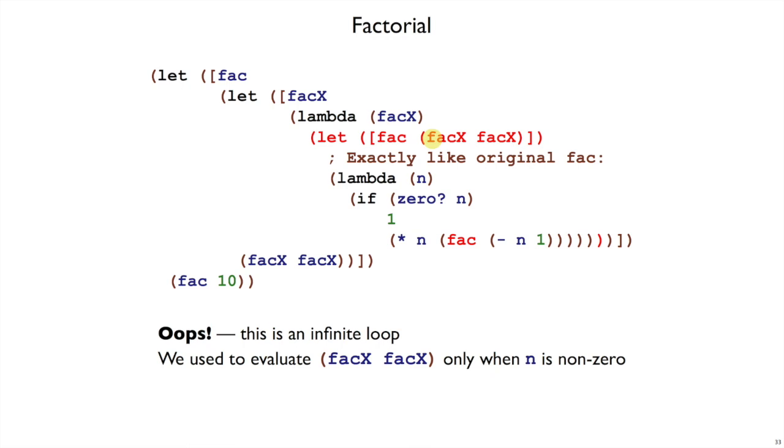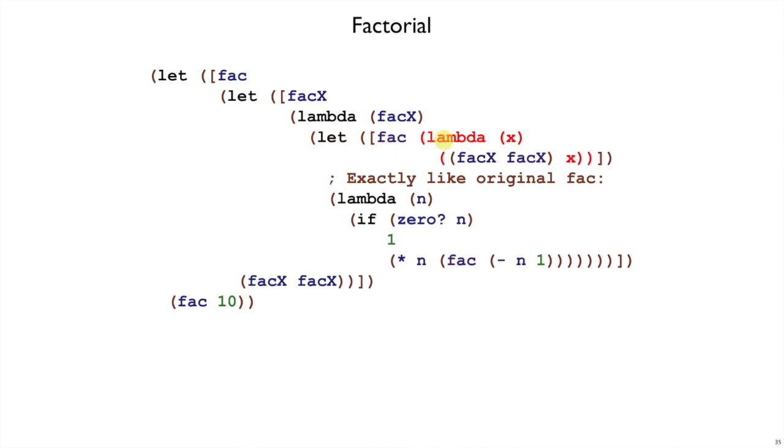So to solve this problem, we need to make sure that we only do this self-application when we get this far. And we can do that by delaying the self-application up here. That is, we do the reverse of the transformation we did before. We add a lambda X and then just pass that X along to FACX applied to FACX. That way we only do the self-application when we end up calling the local function FAC here.